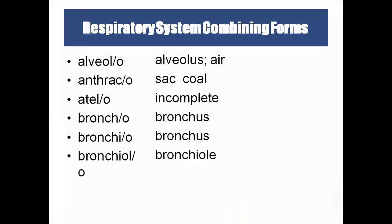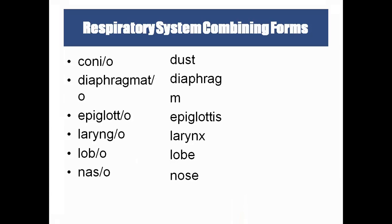Combining forms: alveolo means alveolus or air sac; anthrako means coal — for example, anthracosis is a coal disease affecting coal mine workers; atilo means incomplete; broncho means bronchus, also called air tubes; bronchio and bronchiolo refer to bronchus and the smaller bronchiole; conio means dust; diaphragmato means diaphragm, the partition separating the thorax and abdomen.